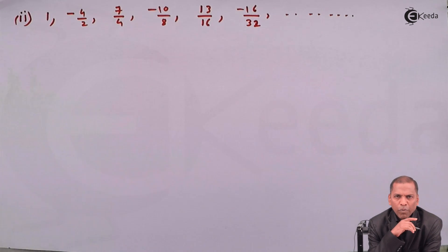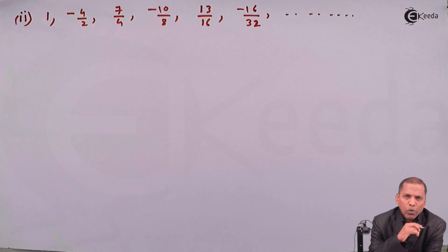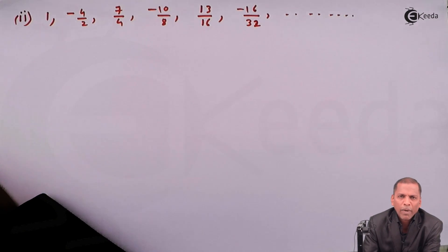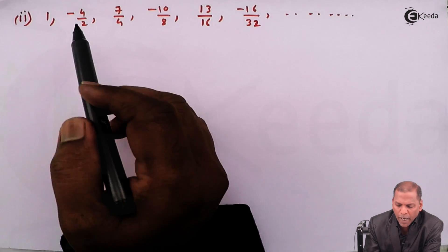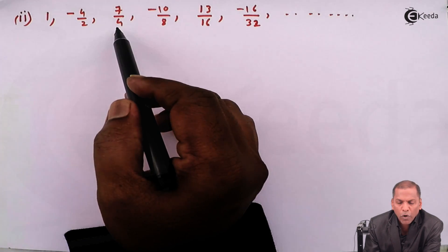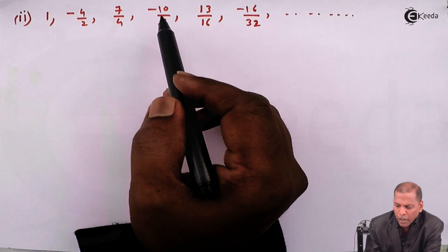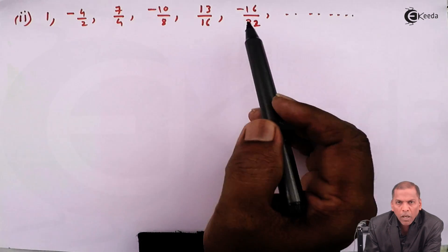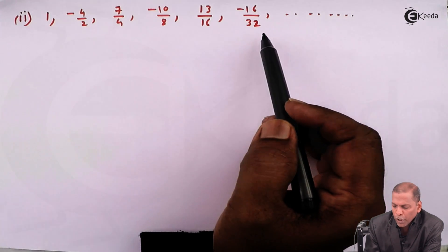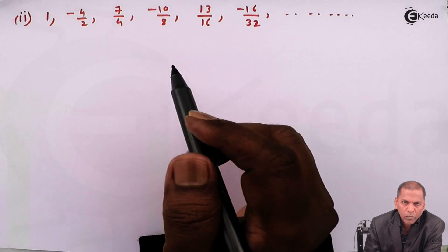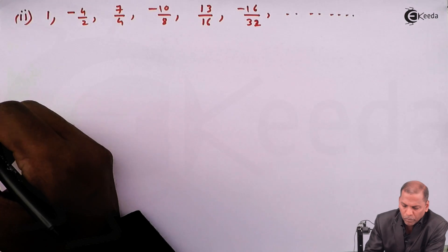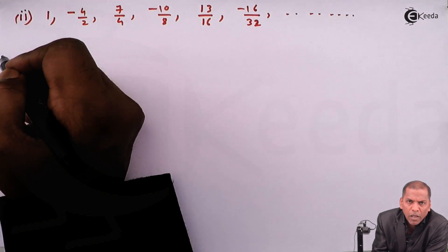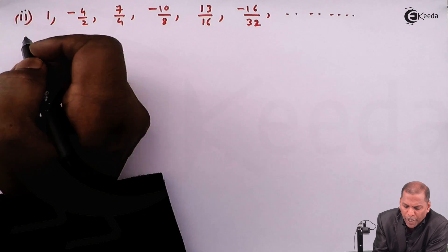Hello friends. Now we see problem number 2, sub-question 2, which is also based on arithmetic progression of chapter Sequences and Series. The sub-question 2 is: 1, -4/2, 7/4, -10/8, 13/16, -16/32, and so on. For this question we have to find the sum to infinity. The solution is quite simple.